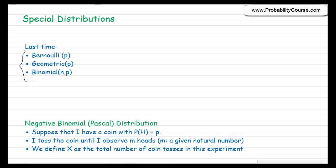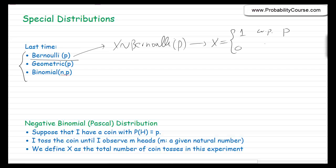If you want to quickly review what we discussed last time: a Bernoulli(p) random variable x equals 1 with probability p and 0 with probability 1 minus p. For a concrete example, assume we have a coin where the probability of heads is p. We toss that coin — if the result is heads, x equals 1; if tails, x equals 0. Whenever you have an experiment with two possible outcomes, you can define a Bernoulli(p) random variable.